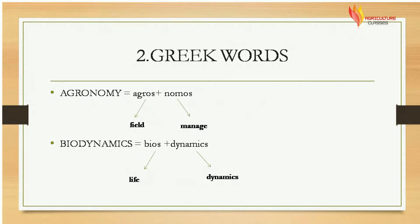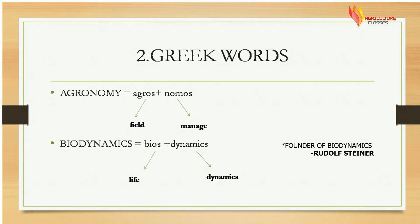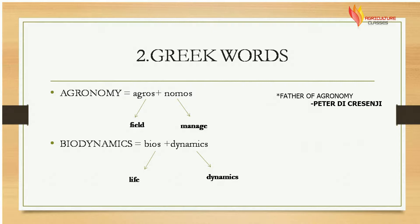Now Greek words. Number one is agronomy, made with Greek words agros and nomos, where agros means field and nomos means to manage. Next word is biodynamics, having bios and dynamics, where bios means life and dynamics refers to movement.